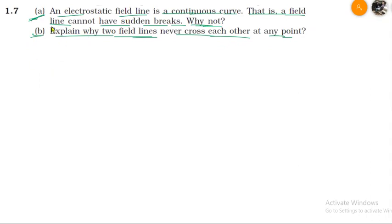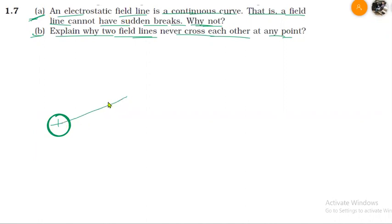It says that an electrostatic field line is a continuous curve and it does not have any sudden break. Like, if we have a positive charge, we know that the field line starts from a positive charge and it goes like this, going out to infinity.